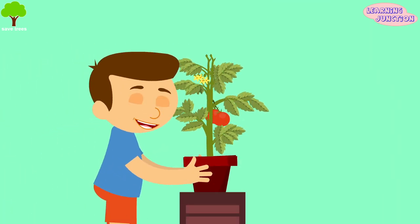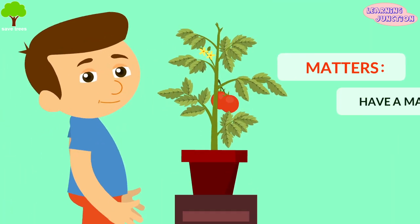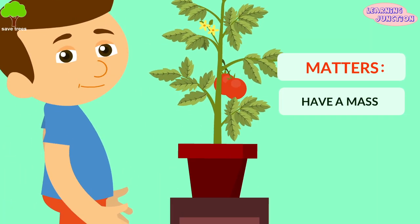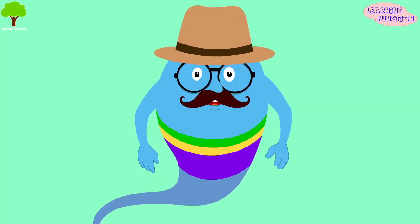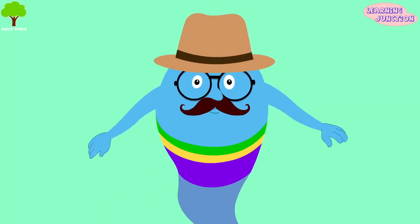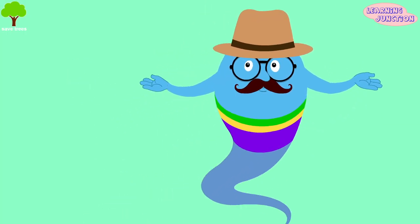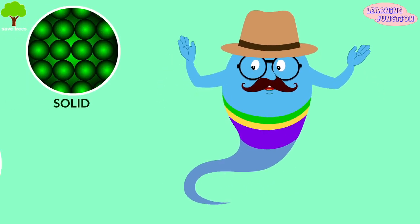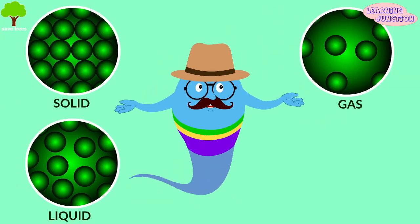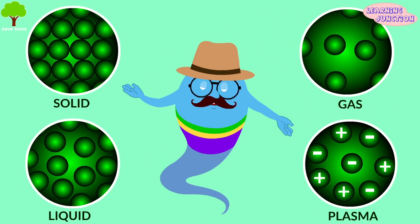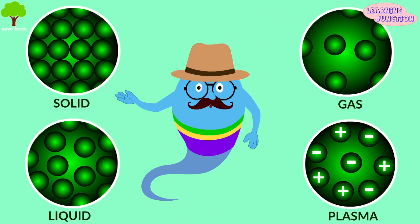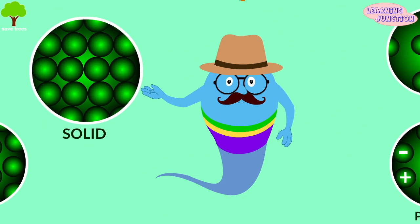Matter can be anything that has mass and occupies space. The most common states or phases of matter are solids, liquids, gases, and plasma. Let's learn about these one by one.